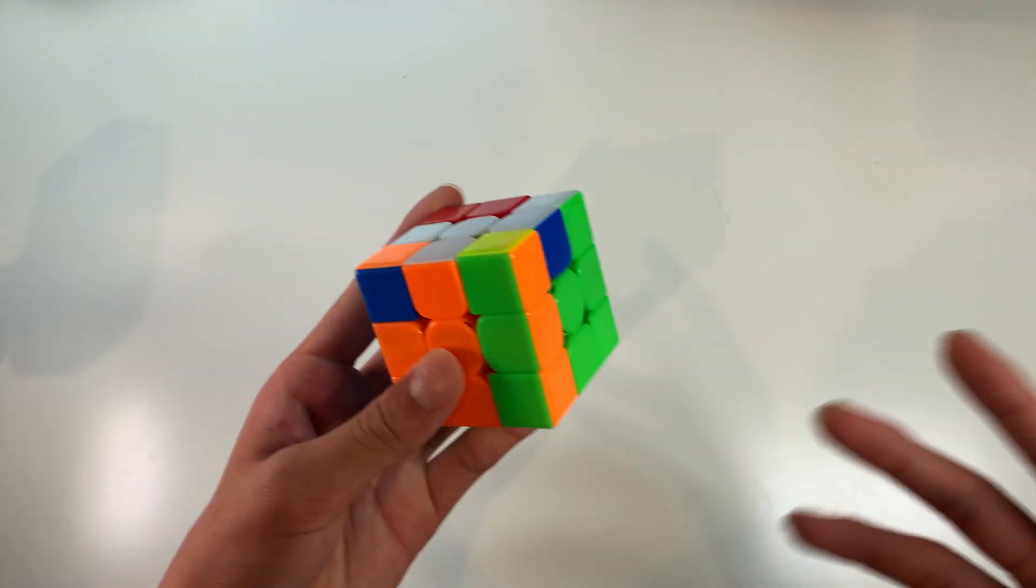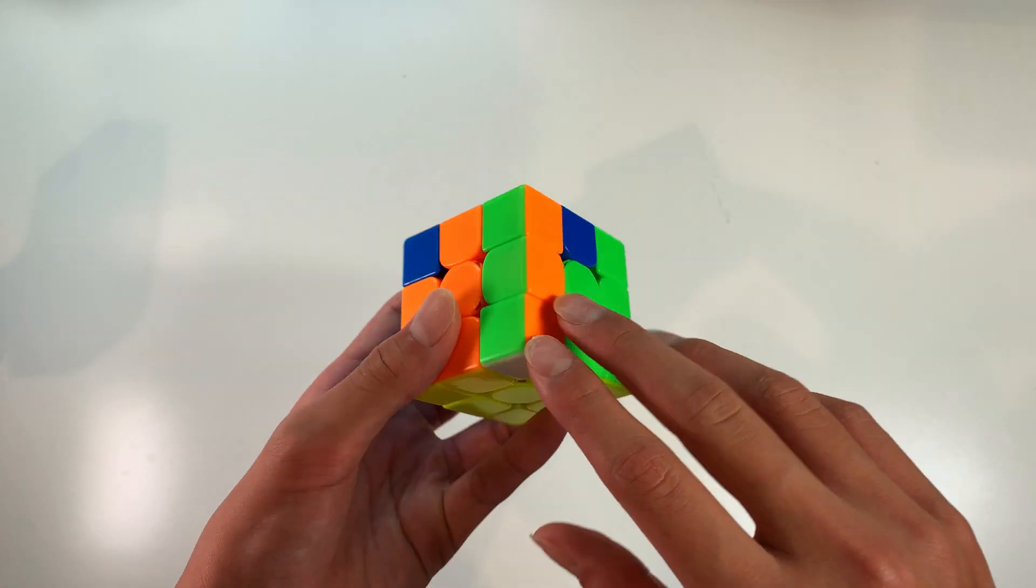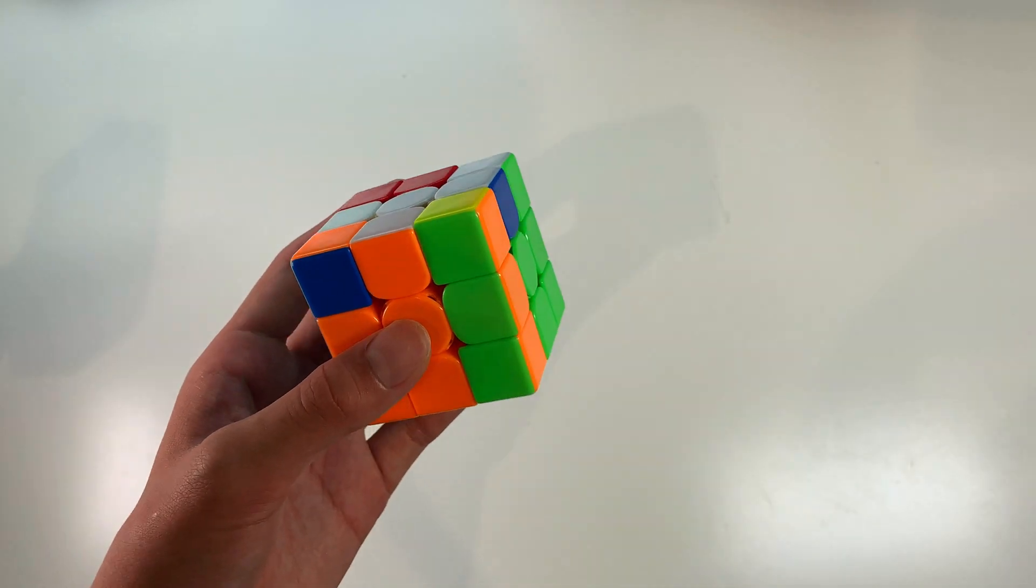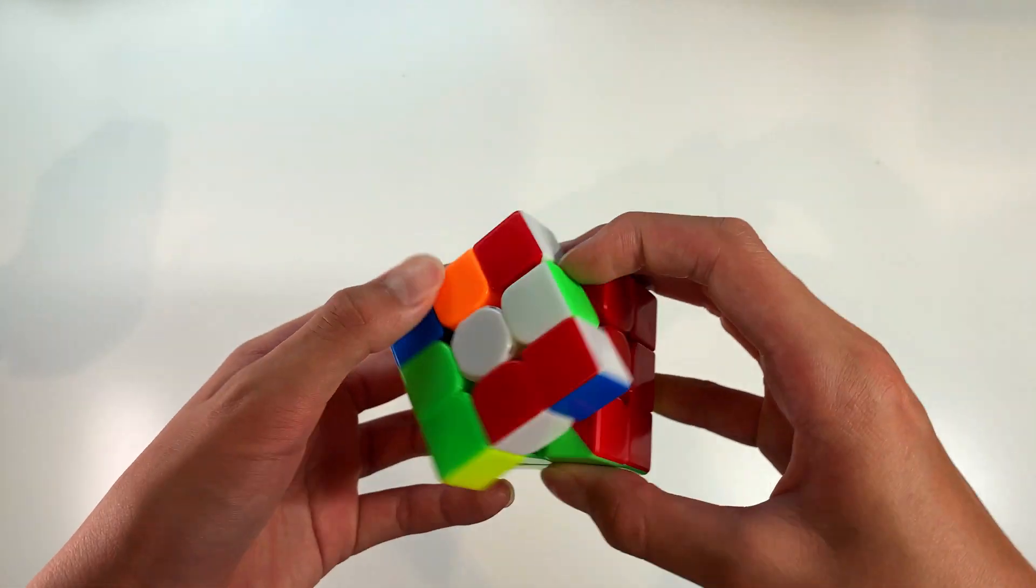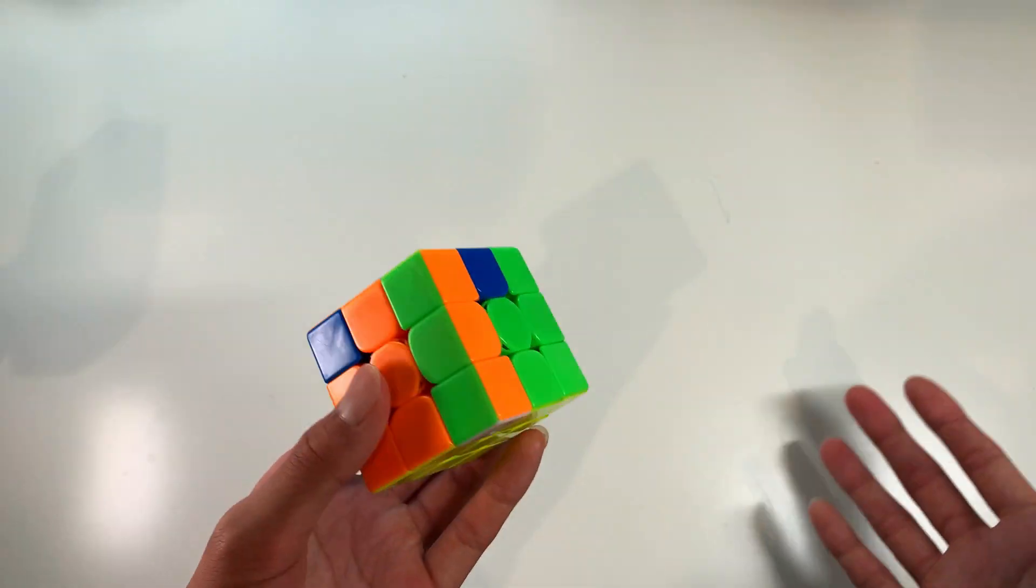Okay next up we have this case which is a pretty common case when the pair is solved but flipped in its own slot. So basically there are a bunch of ways you can do this such as just taking the pair out and inserting it normally which is a pretty decent way but it's not the fastest way.